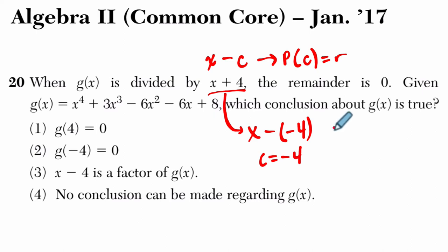And the idea is that if we plug in negative 4 into g of x, not p of x here, sorry, we're dealing with g of x, so c is negative 4. If we plug in negative 4, we get the remainder. But the remainder we're getting is what? It's zero.